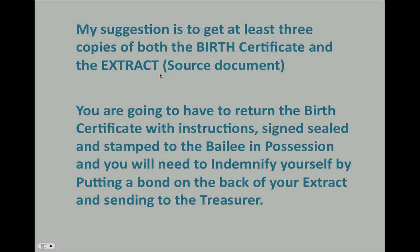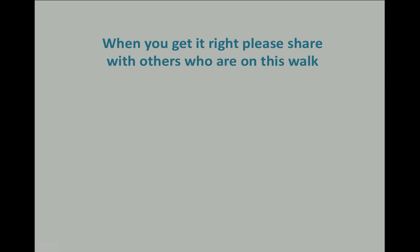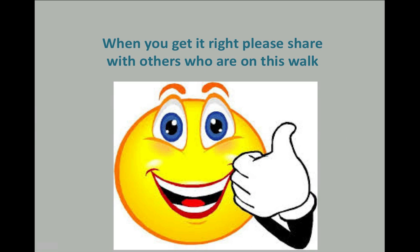My suggestion is to get at least three copies of both the birth certificate and the extract, because no one's got it absolutely 100% correct yet, and if someone does they change the rules. You're going to have to return the birth certificate with instructions — fill out the back of the form, and if you've watched my 'born identity' video you'll see the instructions. You need to have it signed, sealed, stamped, and addressed to the bailee in possession. You're going to need to put an indemnity bond on the back of your extract and send that to the treasurer — this is if you want to operate in the private, and you may not want to go that far. When you do get it right, please share this information freely with others who are on this walk. Hope this has helped.